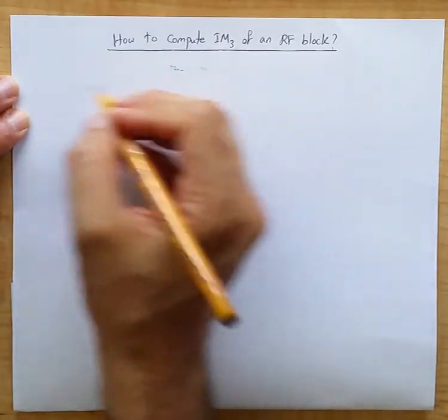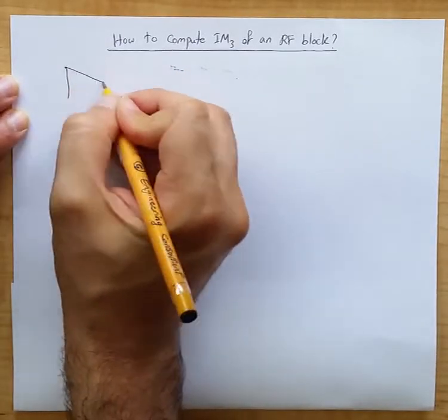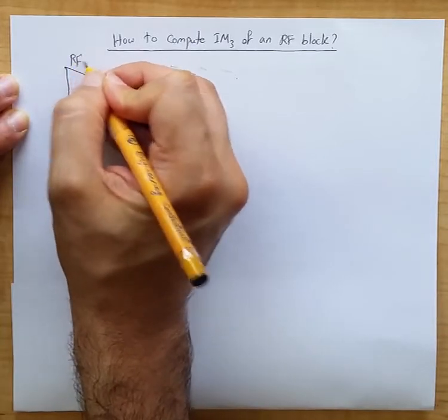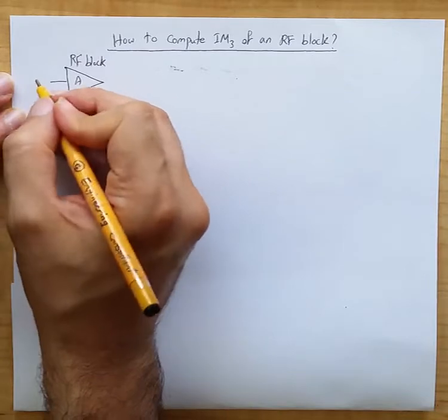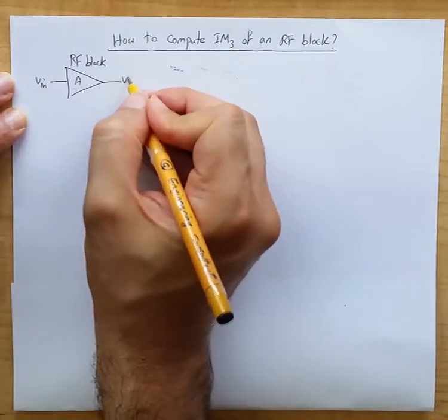We want to be able to compute IM3 of an RF block. Let's say this is an RF block with a voltage gain A. When you apply VN, you get V out.